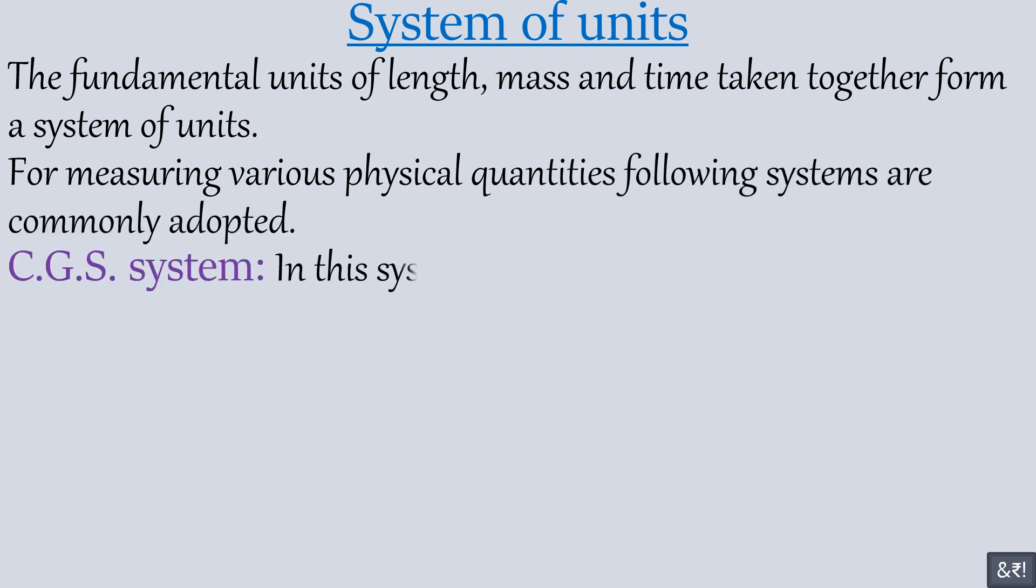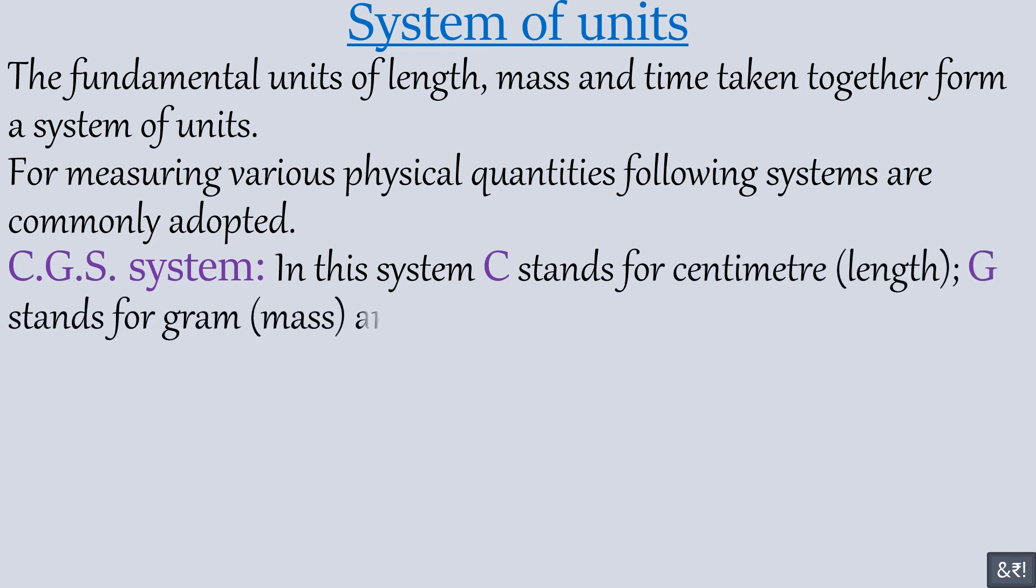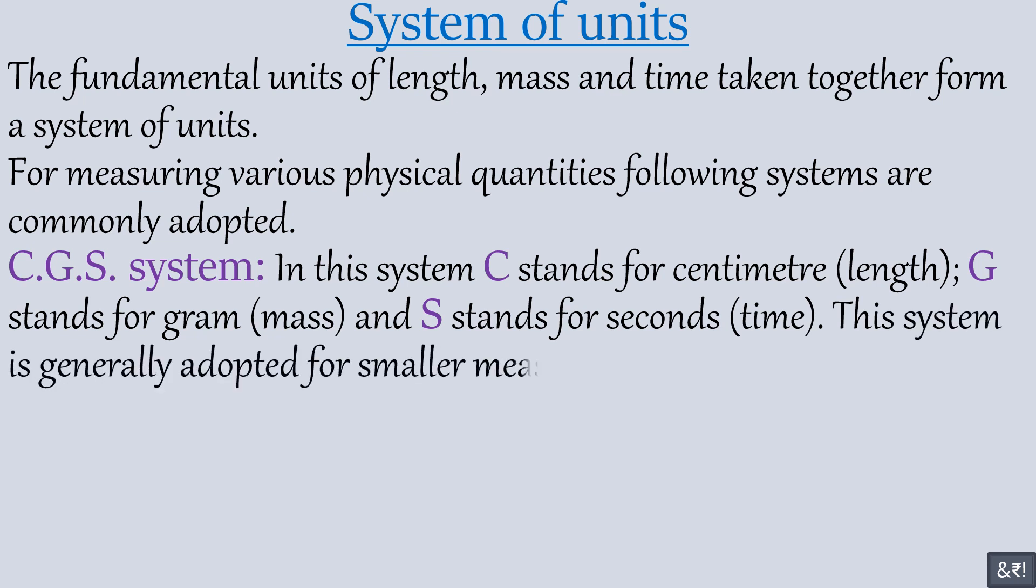CGS system: In this system C stands for centimeter (length), G stands for gram (mass), and S stands for seconds (time). This system is generally adopted for smaller measurements of mass, length and time.